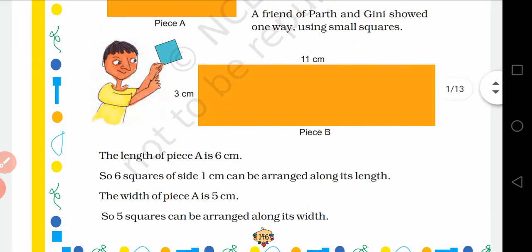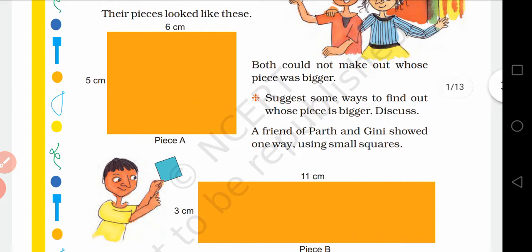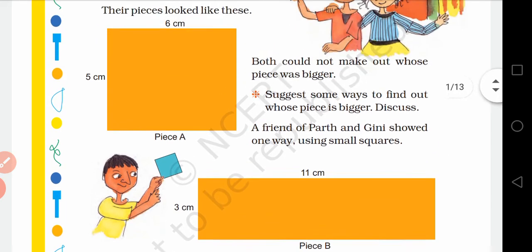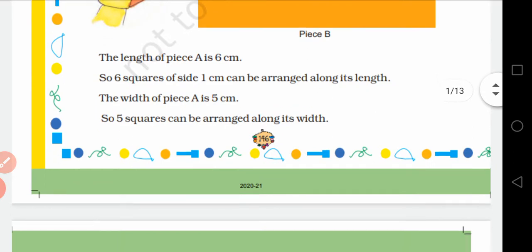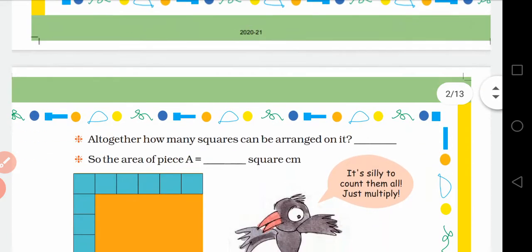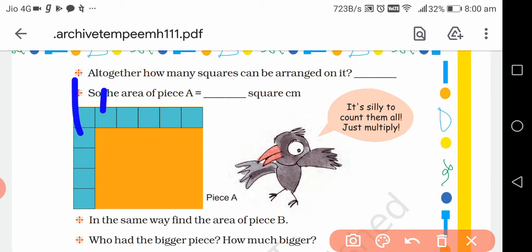The length of piece A is 6 cm, okay. And so squares of side 1 cm can be arranged along its length. So 1 cm square, jo hum square grid me padhte the, jiska length hoga 1 cm, aur breadth bhi hoga 1 cm. Usi ko agar hum lengthwise rakhenge, to length me 6 squares - 6 small squares can be fitted into the square. The width is 5 cm. So 5 squares can be arranged along its width.